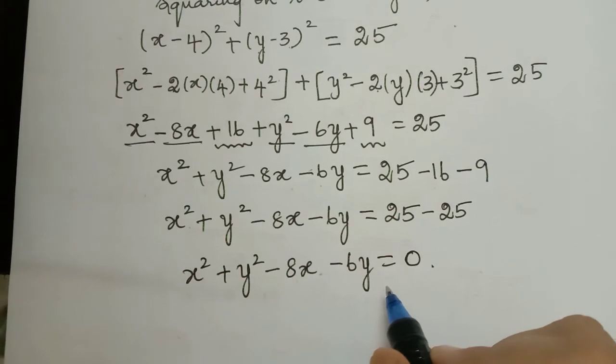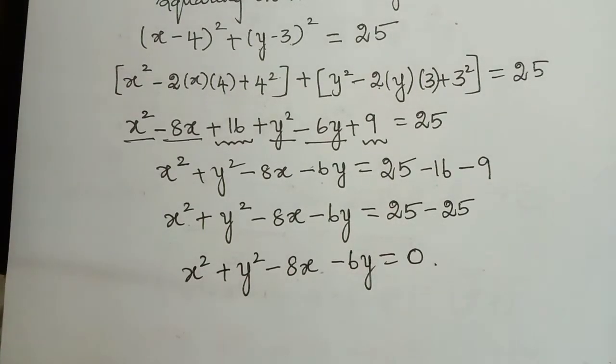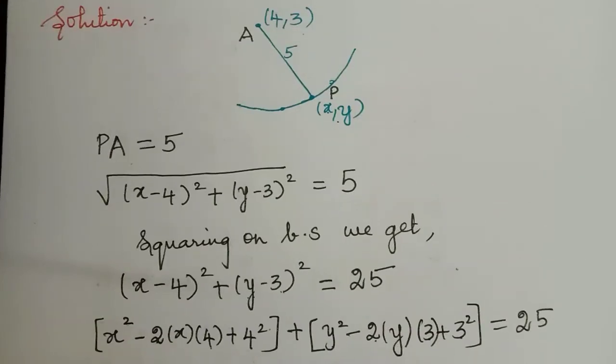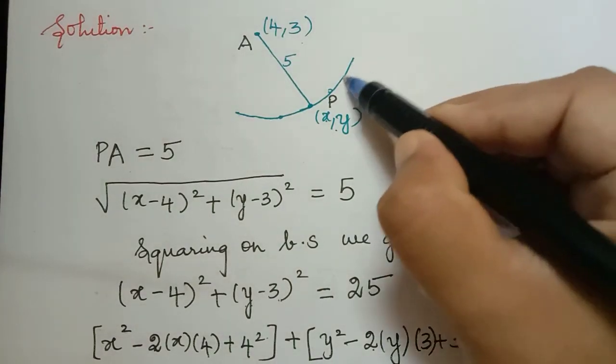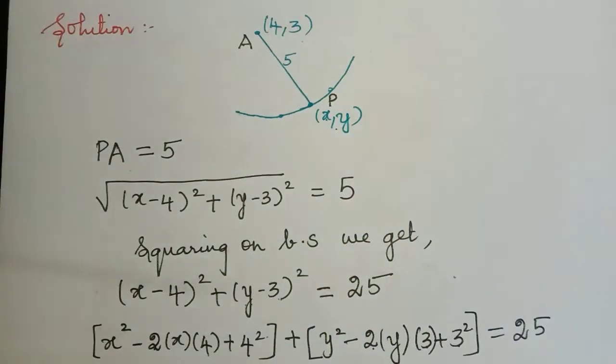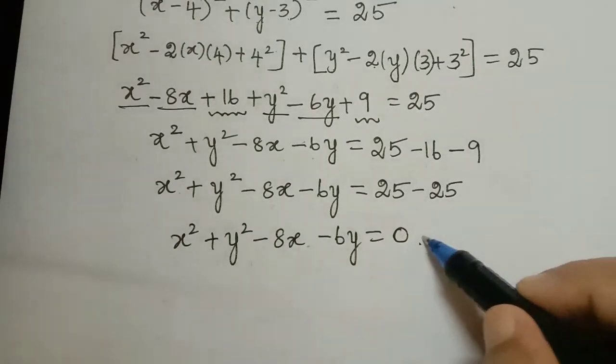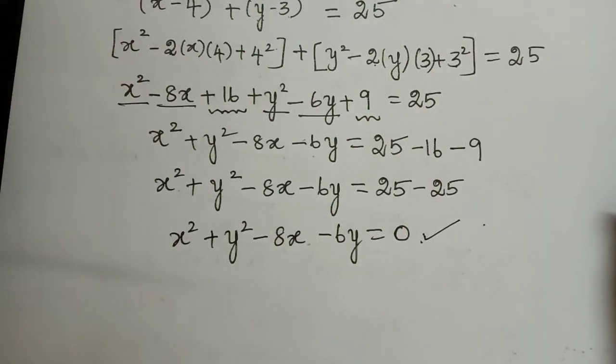So this is the locus of the point which moves from the given point (4,3). So this is the equation of this curve. So we have obtained this equation. Hope you have understood this problem. Thank you.